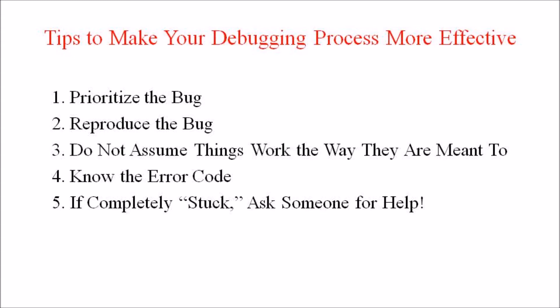Reproduce the bug — make sure that we have reproduced the original bug before making any changes. If we are not able to remember what we have done before, then the original bug remains unsolved in our program. The third tip is do not assume that things work the way they are meant to.